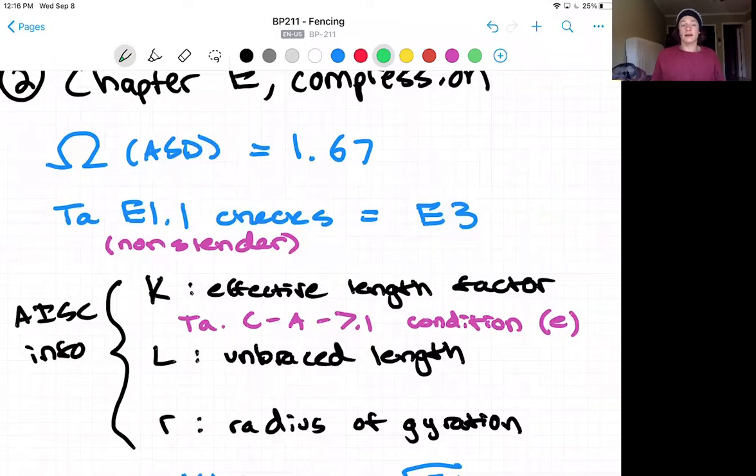And we navigate to the E3 check. You can find there are three new pieces of information we need to find from the AISC info. The effective length factor, which you can find in table C-A-7.1 for condition E, which is a cantilever beam or cantilever post condition. L will just be our unbraced length and R will be our radius of gyration, which is also in the SHAPES database.